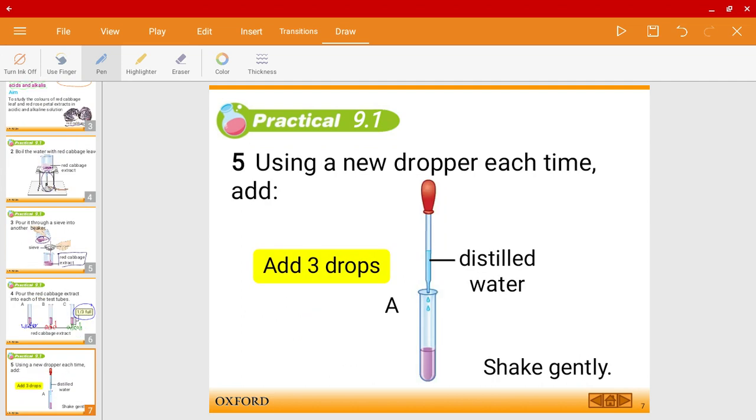Okay, so let's have a look. So as I mentioned, in test tube A, we'll be adding distilled water. So you will add around three to four drops. That will be good enough. And remember to shake gently.